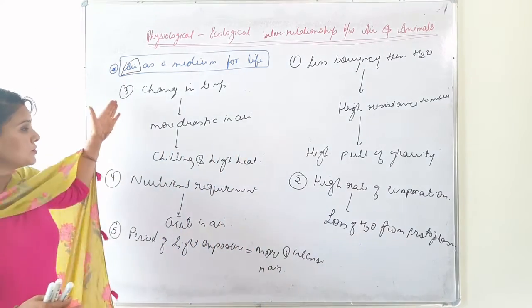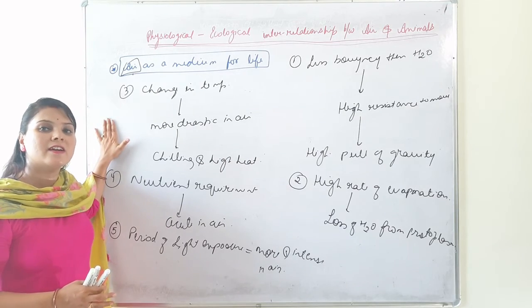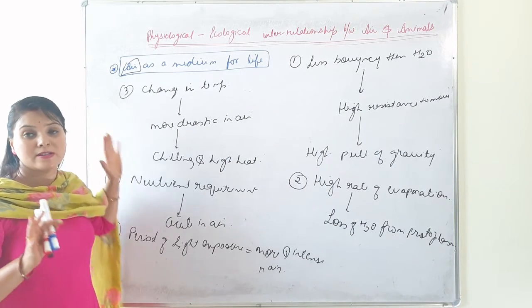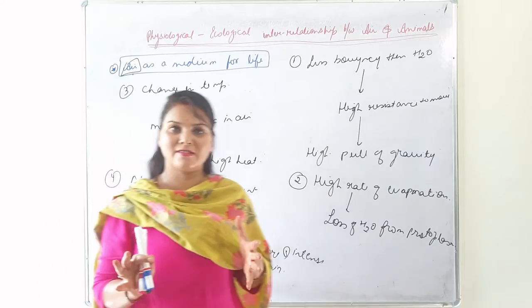Lastly, the period of light exposure is more and intense in air compared to land or aquatic environments. So due to these characteristics, air is not a suitable or easy medium for existence of life.